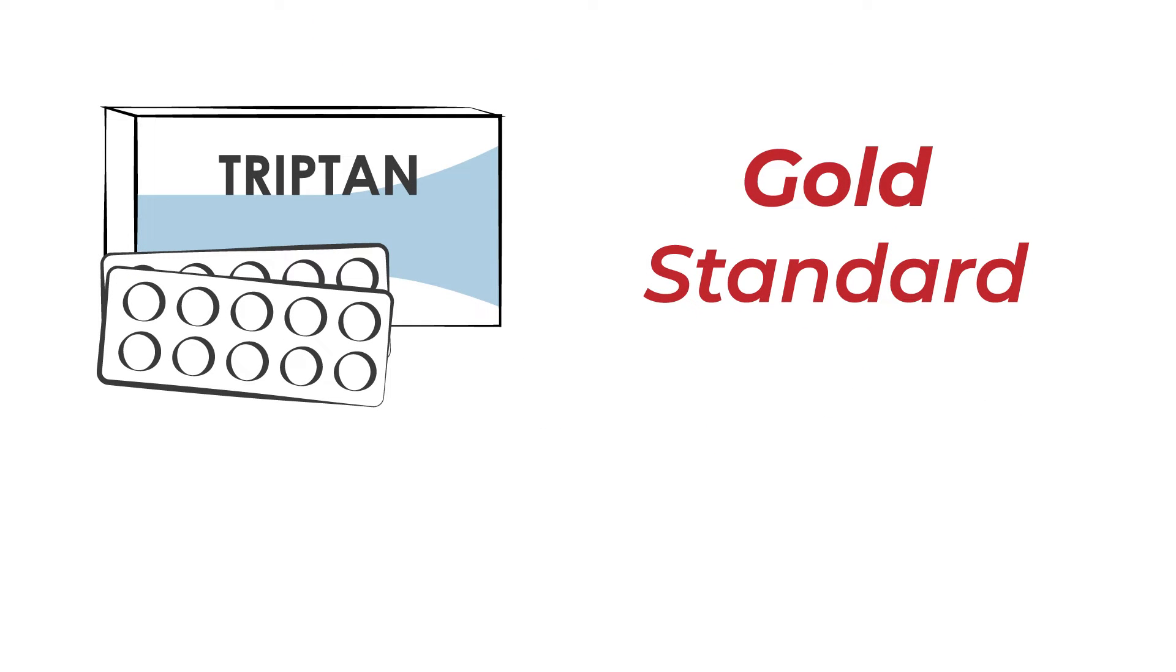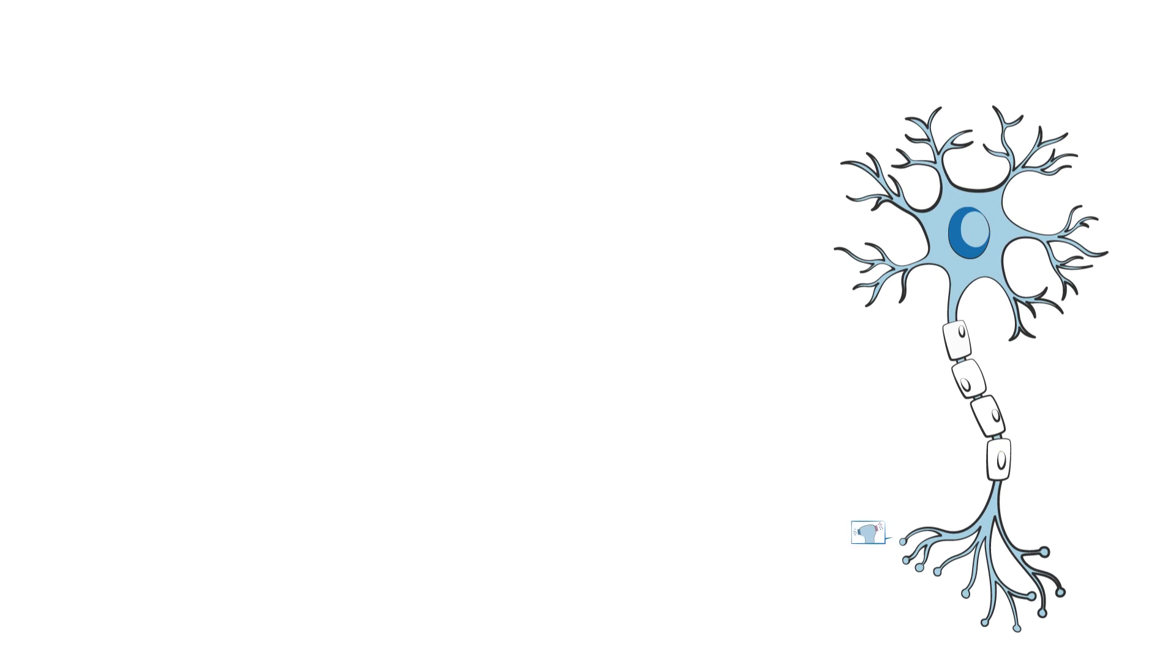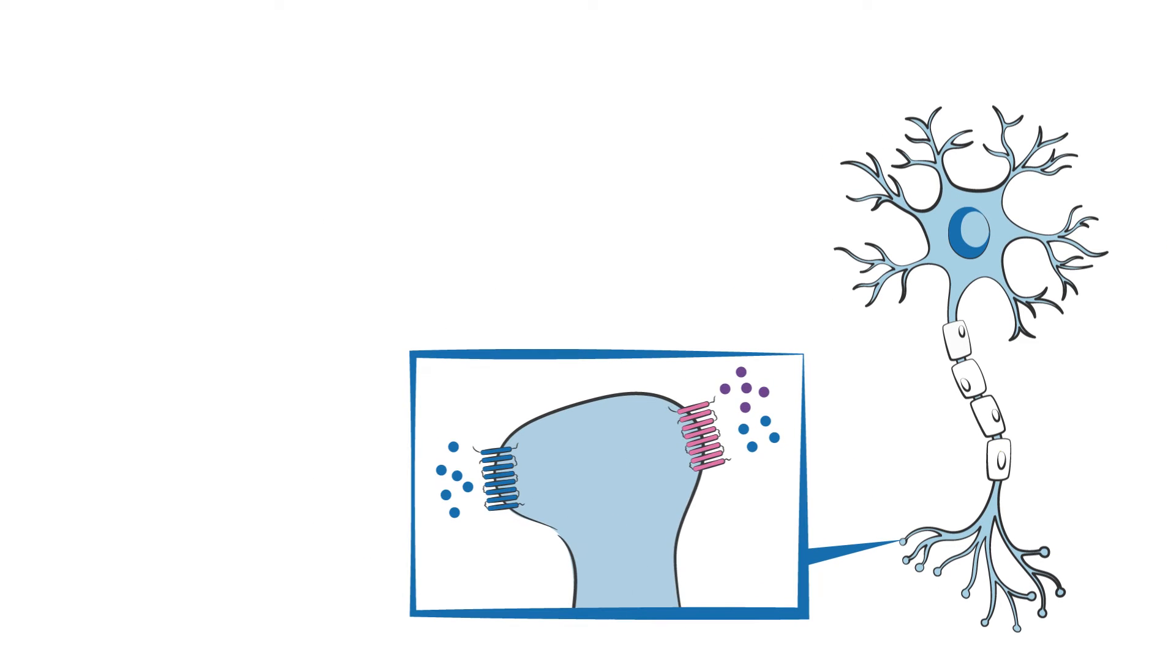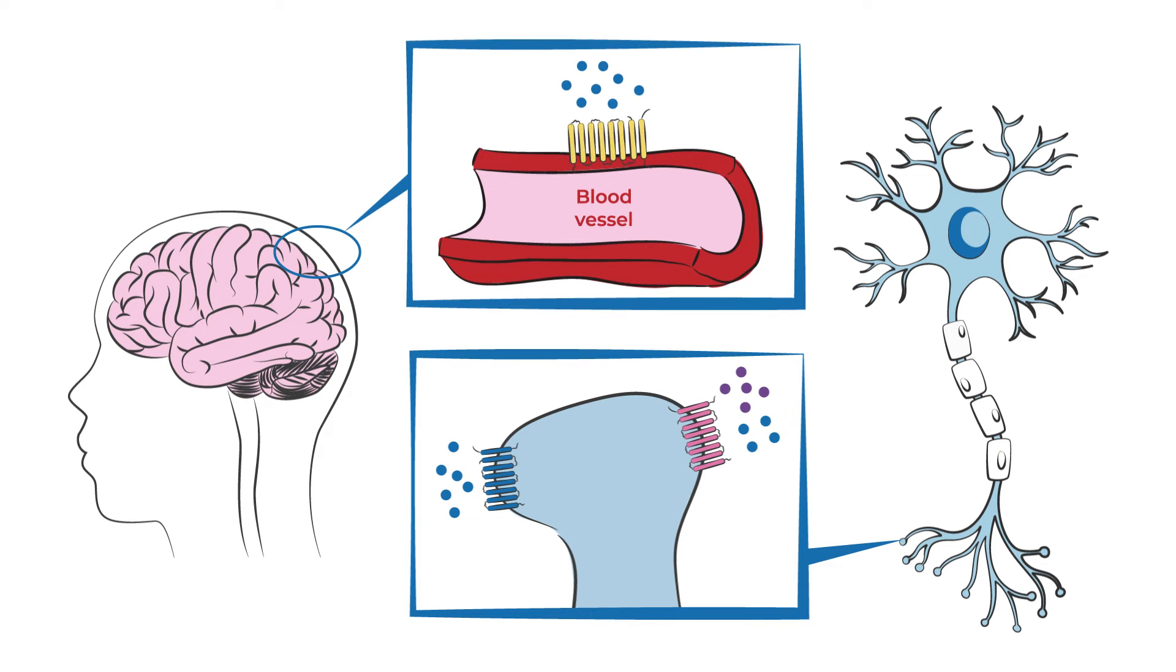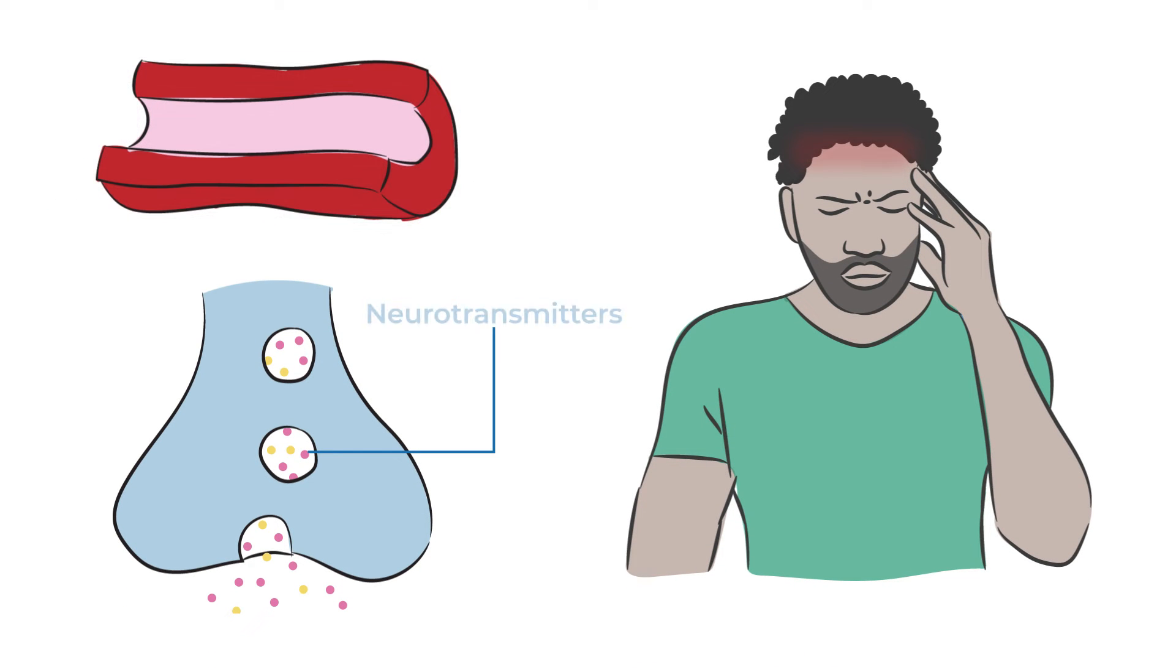Triptans have been the gold standard for acute migraine treatment since their development in the 1990s. They treat migraine by targeting specific serotonin receptors on nerves and blood vessels in the brain. This is thought to narrow blood vessels and reduce the release of certain neurotransmitters to decrease pain and inflammation.